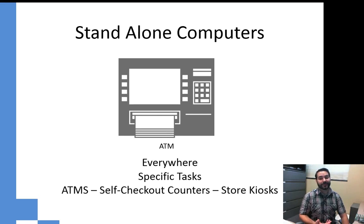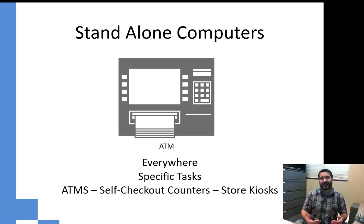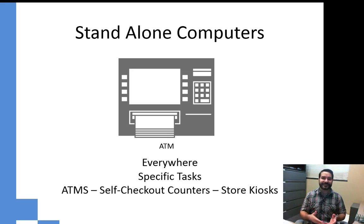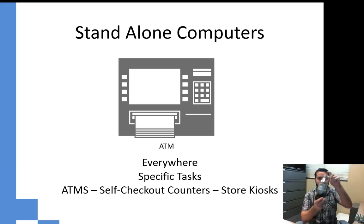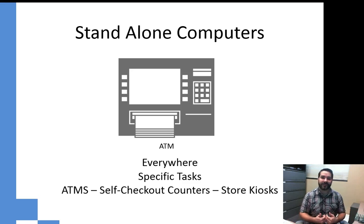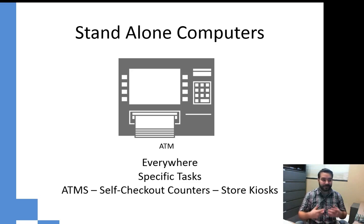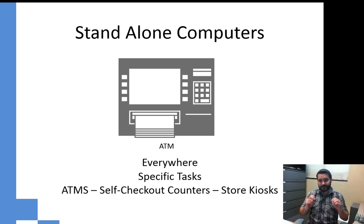We also have standalone computers — basically your ATMs, your self-checkout lines. Go to Harris Teeter or Lowe's. I go through the self-checkout line — it's faster and easier. But that's a computer. If we look at the definition again, it accepts user input. Here's a Diet Coke with a barcode — that's what I scan. That's my input to the computer. It reads it in, processes that information, looks into its database, finds the UPC code, and rings up every item I scan until I tell it to proceed to the payment process. Standalone computers are kind of running our worlds.